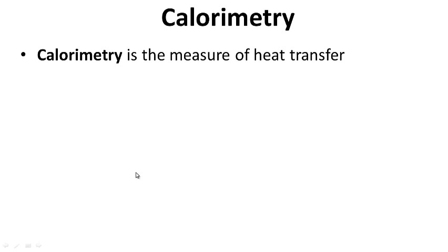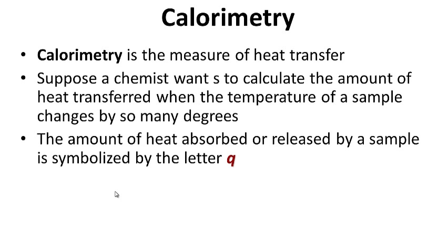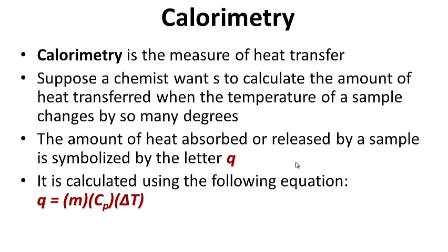Calorimetry is the measure of heat transfer. Suppose a chemist wants to calculate the amount of heat transferred when the temperature of a sample changes by so many degrees — in other words, how much heat was lost or gained by a substance. The amount of heat absorbed or released is symbolized by Q. Q represents the amount of heat transferred, lost or gained by a substance. It is calculated using the equation Q equals the mass of the substance, times the specific heat, times the change in temperature.